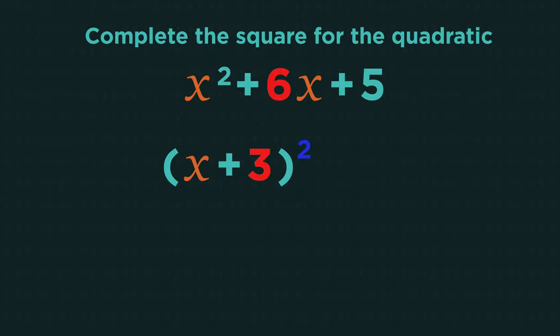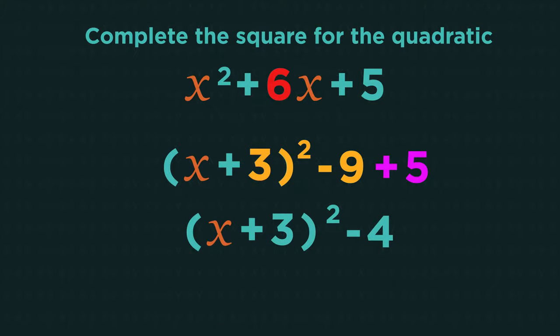And because three squared is nine, we need to subtract nine. Then bring the five down from the question. So we get x plus three squared minus four. And we've completed the square.